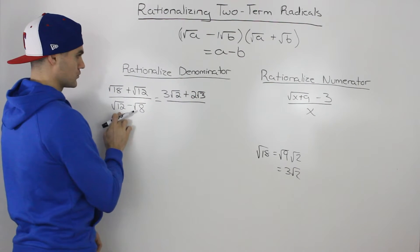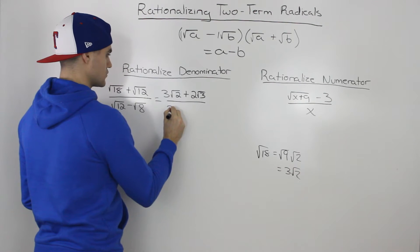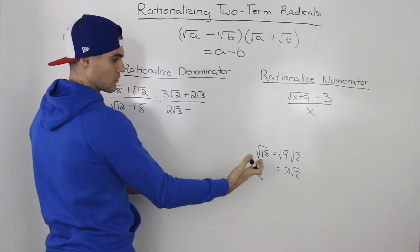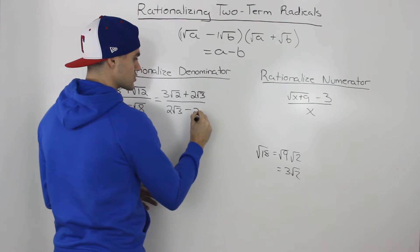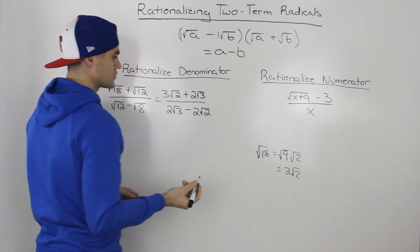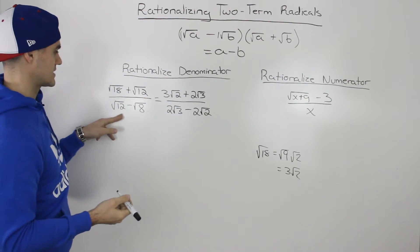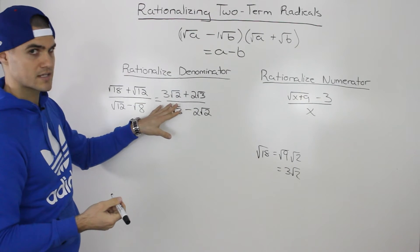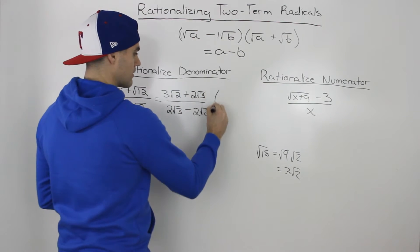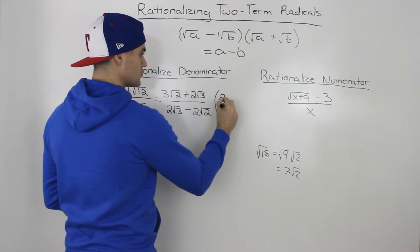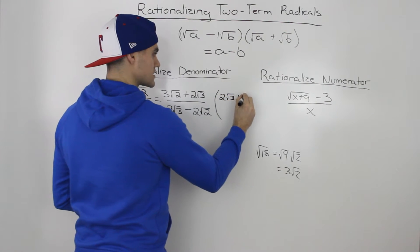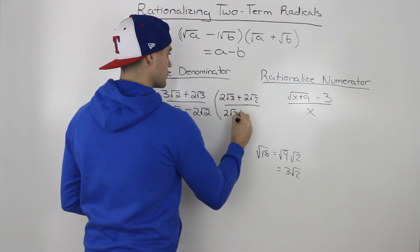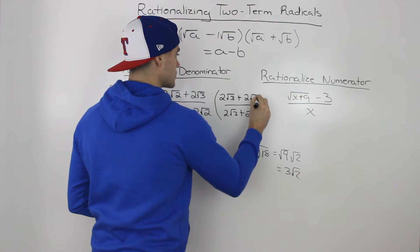And then all over the root 12, again, we can rewrite that as 2 root 3. Minus the square root of 8, we can rewrite as the square root of 4 times the square root of 2, and then the square root of 4 is 2, so we'd have 2 root 2. Now this simplified expression is the same as the original, and we can multiply by the conjugate. So it would be 2 root 3 plus 2 root 2, over 2 root 3 plus 2 root 2.